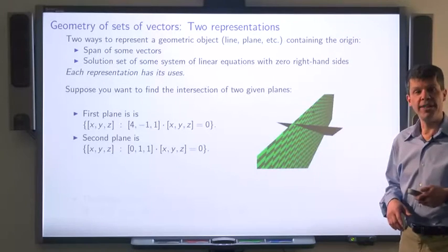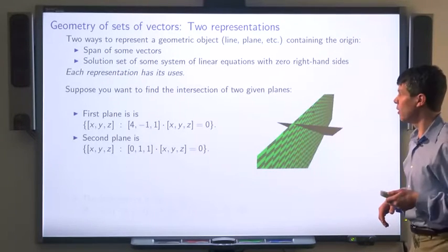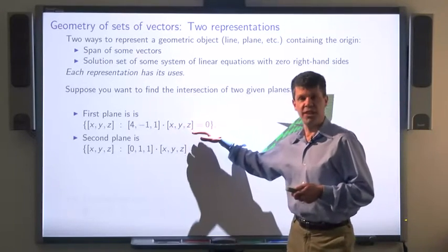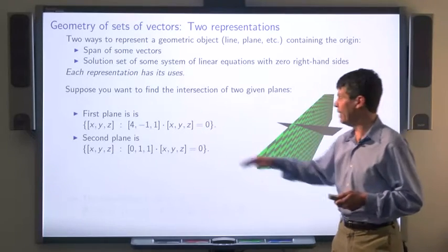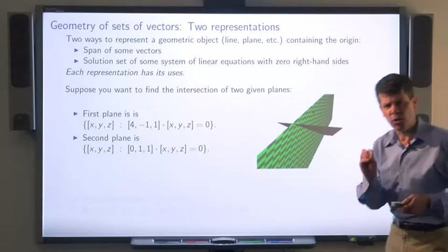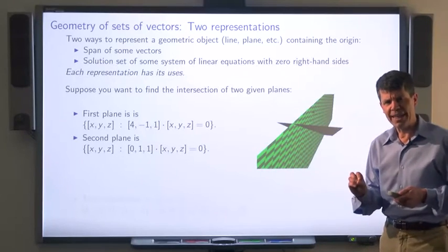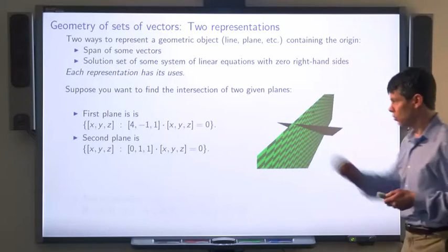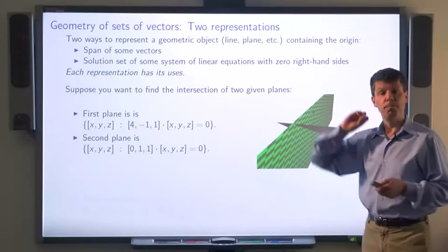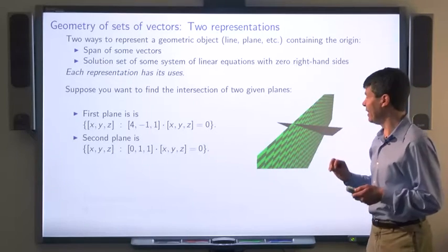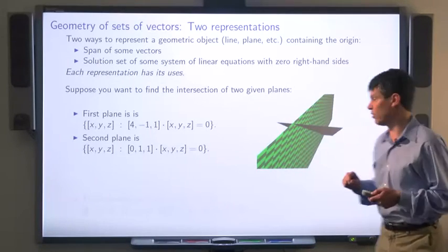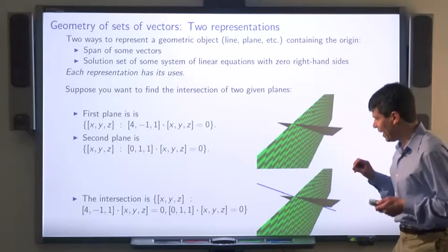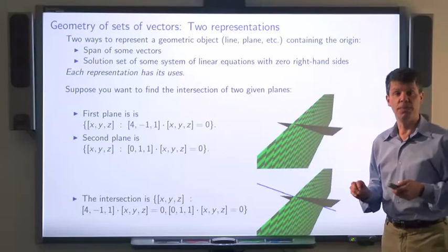Now suppose you want to find the intersection of two planes. If one plane is represented as the solution set of one linear equation, and the other plane as the solution set of another linear equation, how can you find a representation of the line that is the intersection of these two planes? It turns out you want the points — the triples x, y, and z — that satisfy both equations. So by using this representation, we can get the line that's the intersection of the two planes.